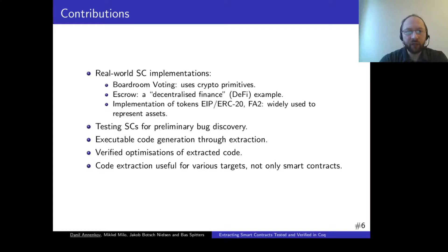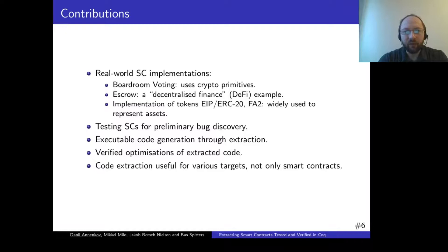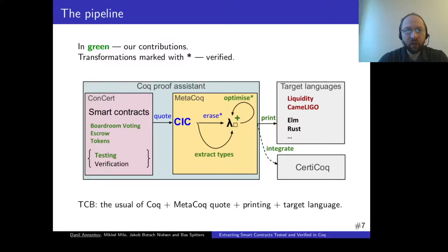This work contributes with several real-world use cases of smart contracts, specifically a modern voting contract, escrow, and implementation of various token standards, which we implement and verify using our framework. We also contribute with a testing framework for smart contracts for preliminary bug discovery to aid verification efforts. We bridge the gap between formal development of smart contracts in Coq and executable code through code extraction. Things given in green in the pipeline are our contributions, and translations marked with a star are verified.